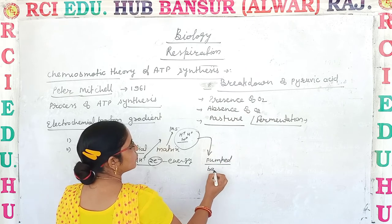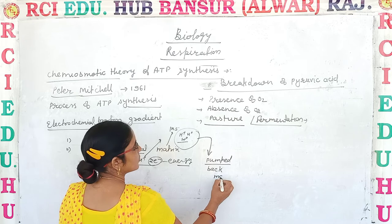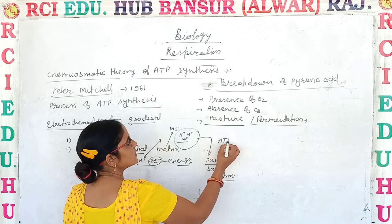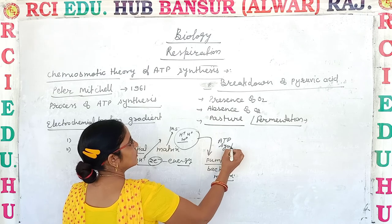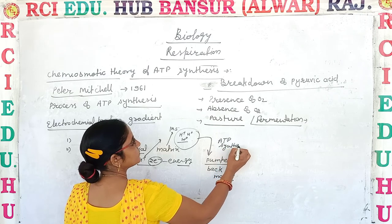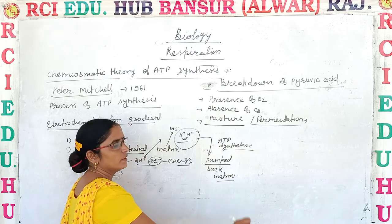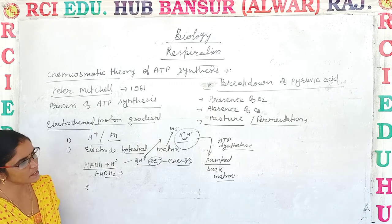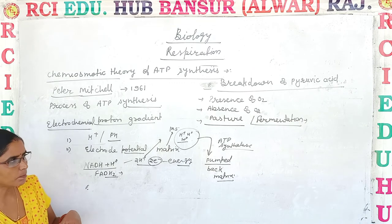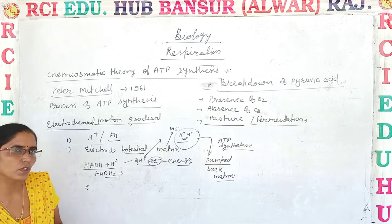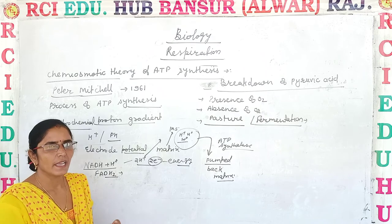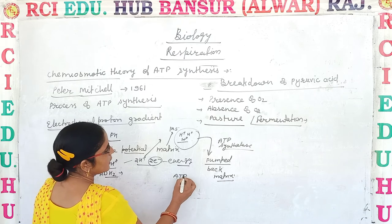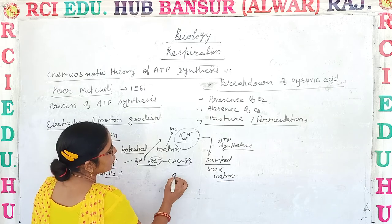The protons are pumped back into the matrix, and that can be done with the help of ATP synthase. In this way, the hydrogen ions are pumped back into the matrix and the energy is utilized in the formation of ATP from ADP and inorganic phosphate.